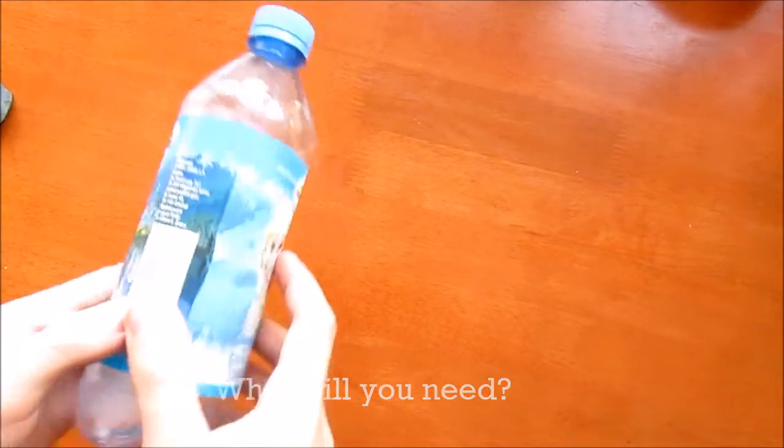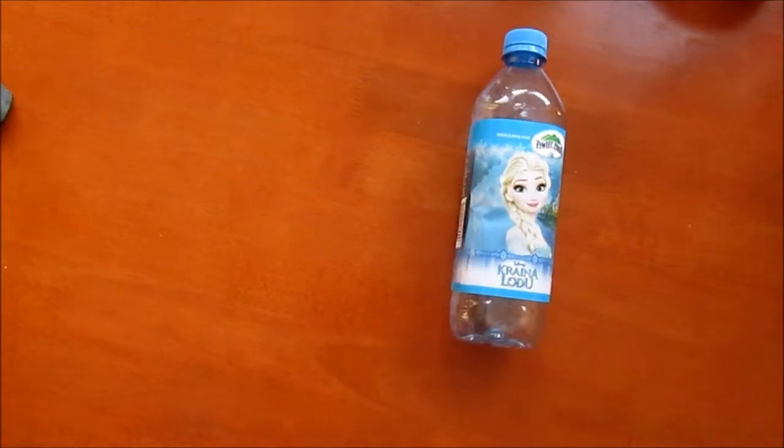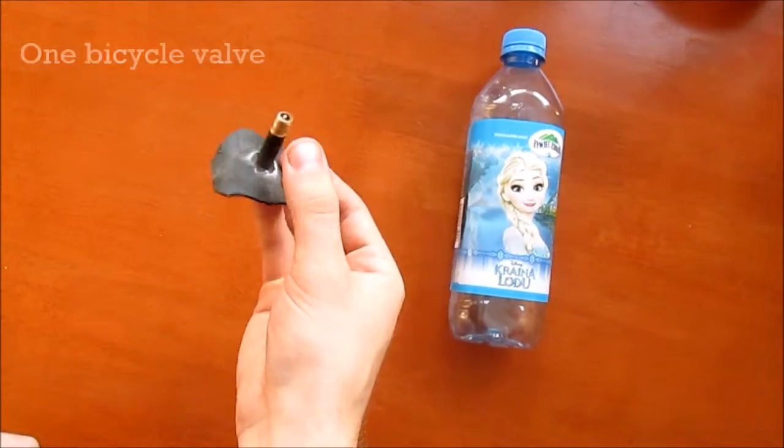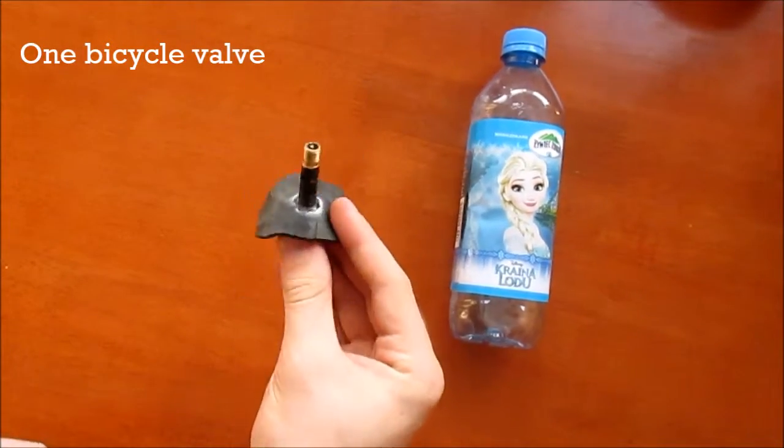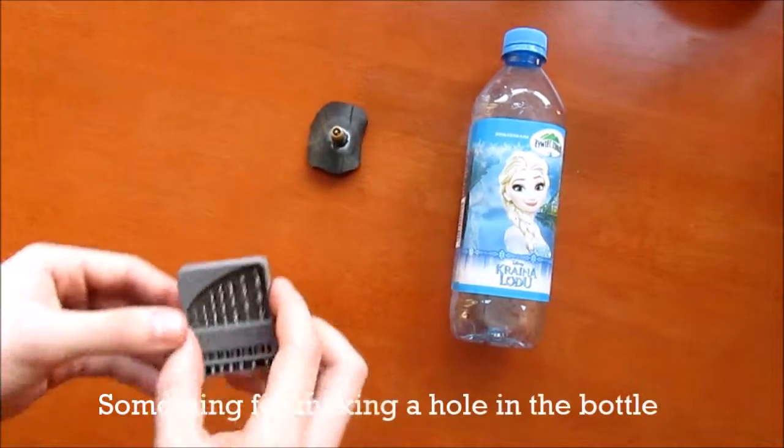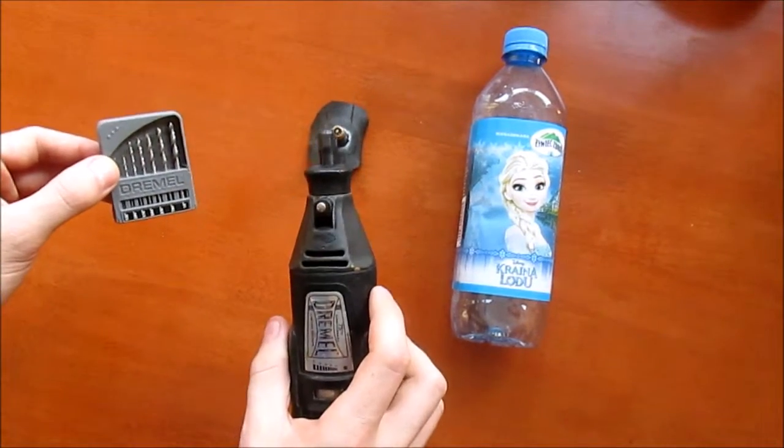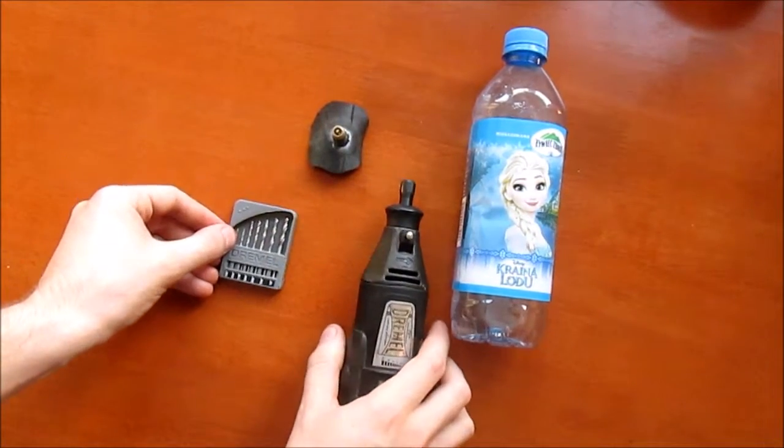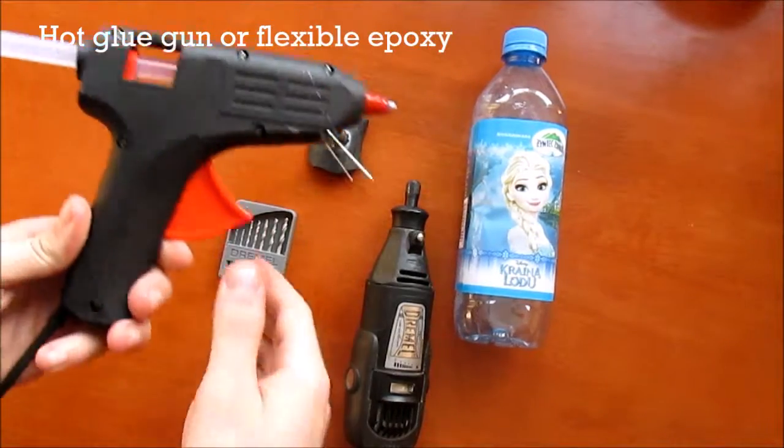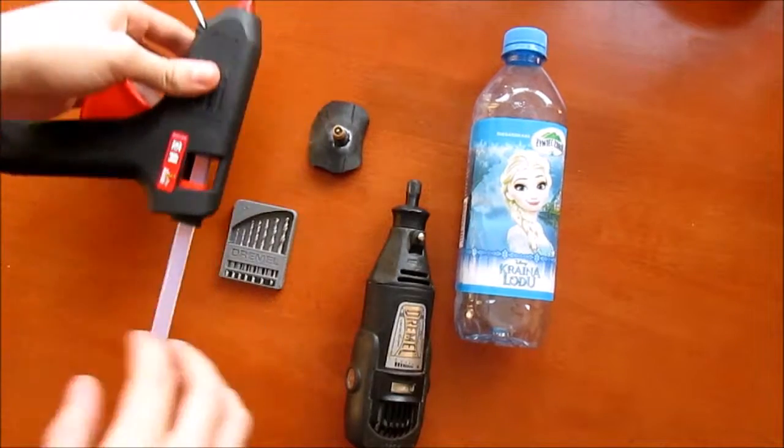To make the bottle blaster you will need a few things. First, one plastic bottle, an old bicycle valve, something to drill a hole through the bottle with (either a Dremel, a hot end, or a drill), and something to attach the valve into the bottle with. Epoxy or a hot glue gun will work.